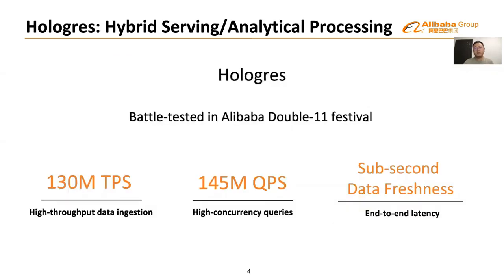Based on these observations, we argue that hybrid serving and analytical processing should be unified and handled in a single system. In Alibaba, we built a cloud-native HSAP service called Hologres. Hologres is battle-tested in Alibaba's Double Eleven Shopping Festival — perhaps one of the most challenging big data scenarios on the planet. During Double-11, the highest ingestion rate recorded in Hologres was 130 million records per second, and the peak query workload reached 145 million queries per second. Under such high workload pressure, Hologres can achieve second or even sub-second latency between when data are generated and when they become queryable.